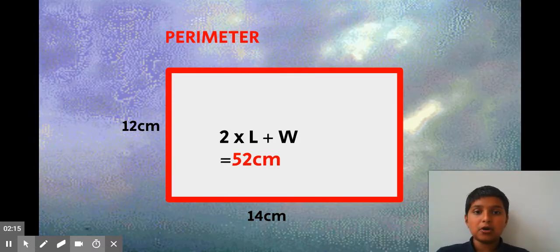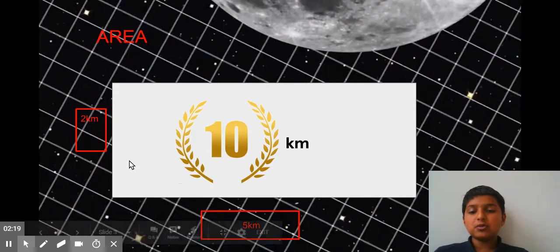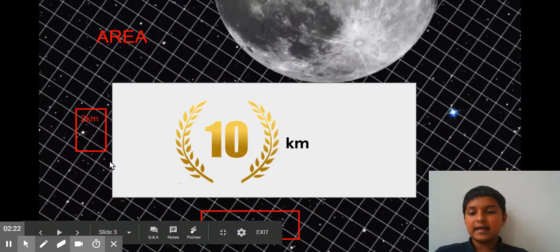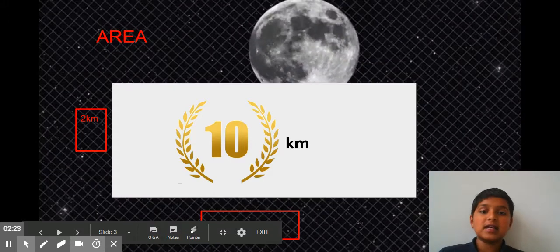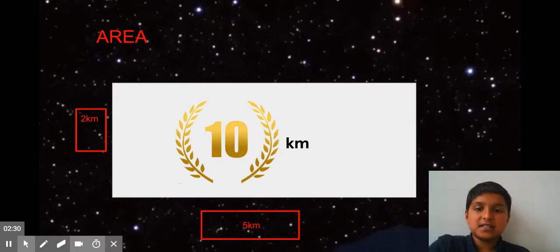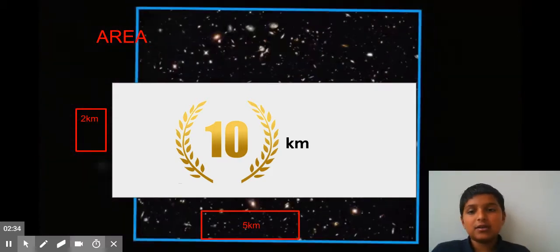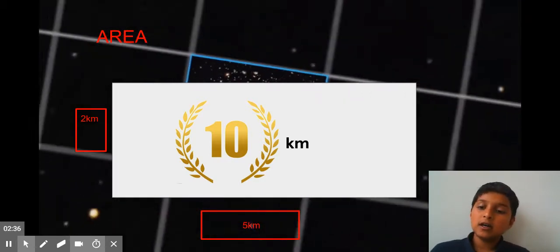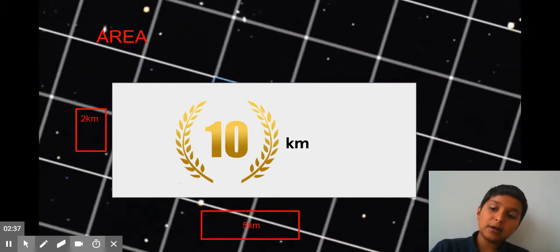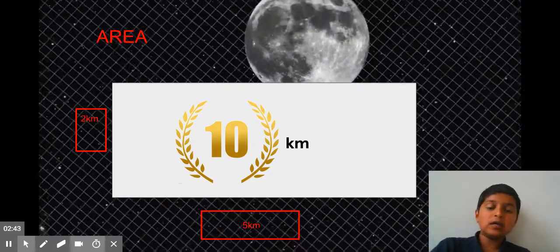here, and our width—the smaller dimension—is 2 kilometers. So our width is 2 kilometers. Now we look